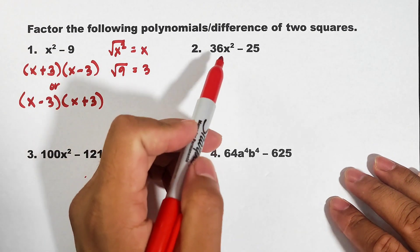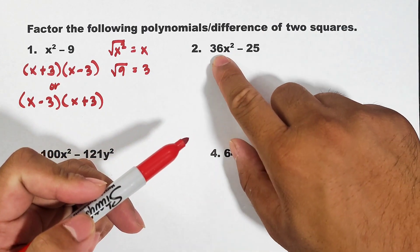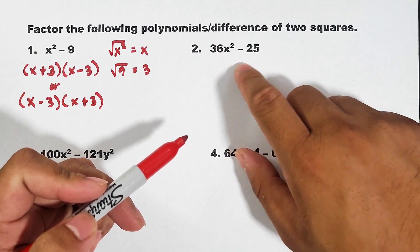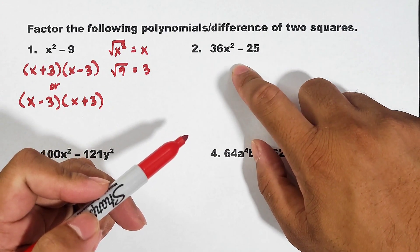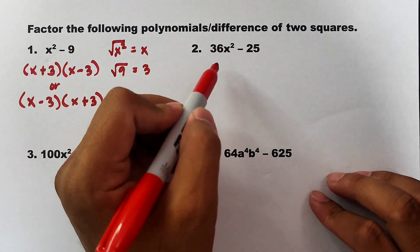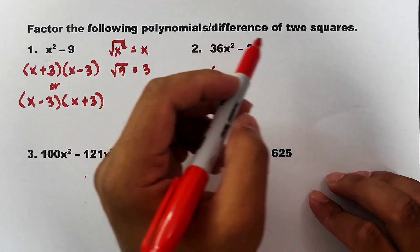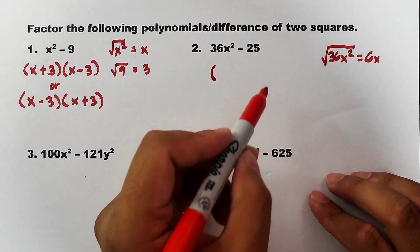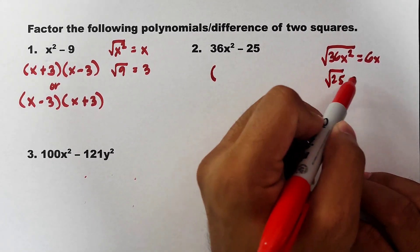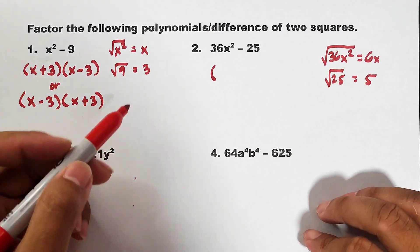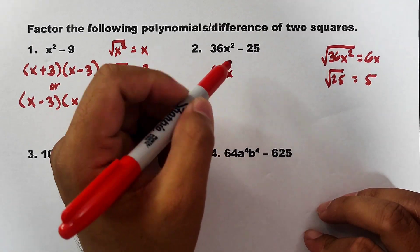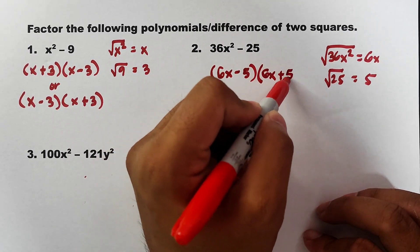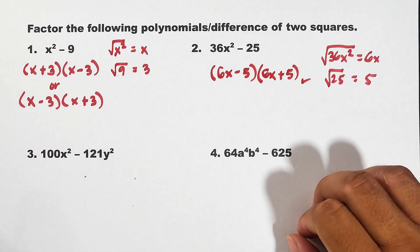In number two we are given 36x squared minus 25. Let's check whether this is a perfect square. 36 is a perfect square, as well as x squared, meaning 36x squared is a perfect square. 25 is also a perfect square. So this is under difference of two squares. The square root of 36x squared is 6x, and the square root of 25 is equal to 5. So the factors are 6x minus 5 times 6x plus 5.